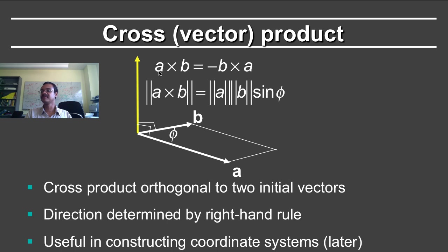Therefore, we have this negative formula. They are not commutative. A cross B is equal to minus B cross A. But the very interesting point is that the cross product is orthogonal to both of the initial vectors, and therefore it is very useful in creating a coordinate system, which we'll talk about in a later segment.